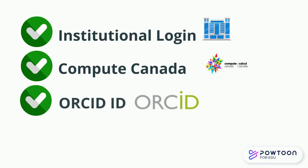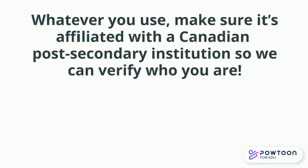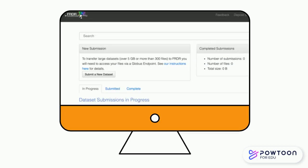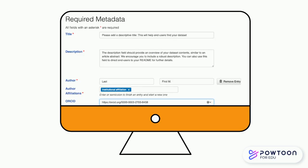You can also create a Globus ID. Whatever you use, make sure it's affiliated with a Canadian post-secondary institution so we can verify who you are. From the FERDR homepage, click Submit a new dataset. Complete the submission process, including metadata details.